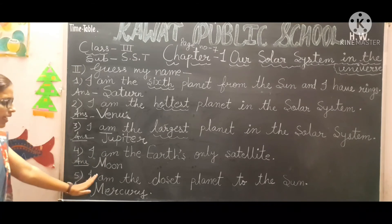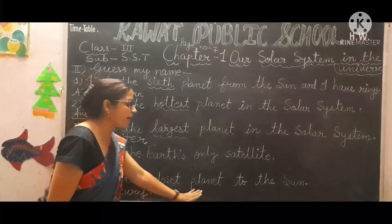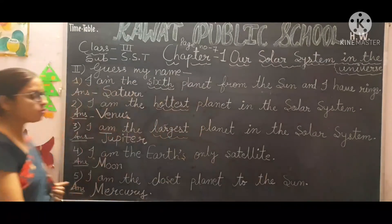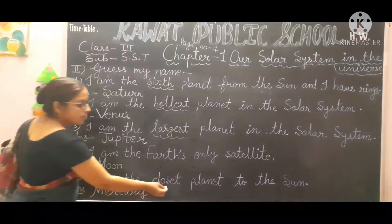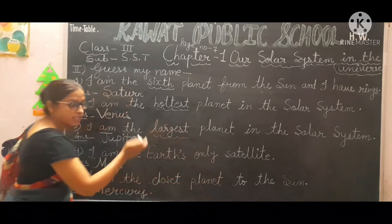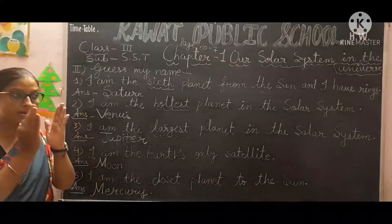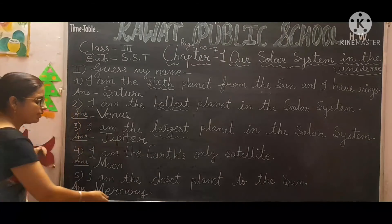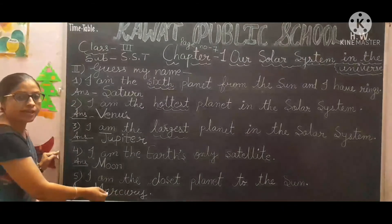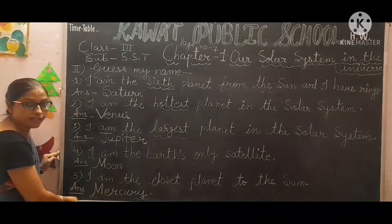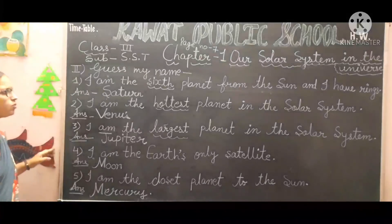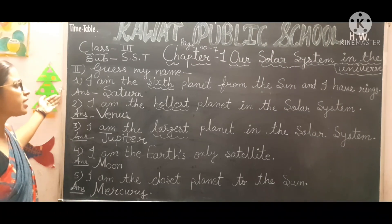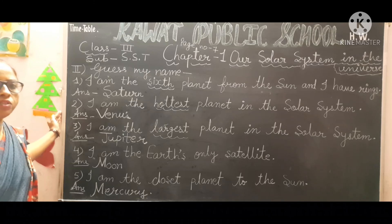Fifth: I am the closest planet to the sun. Which is the planet closest to the sun? The answer is Mercury. Okay students, now you have to do the exercise. Please complete the exercise in your notebook.